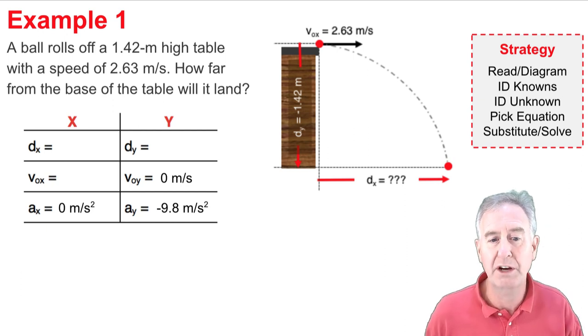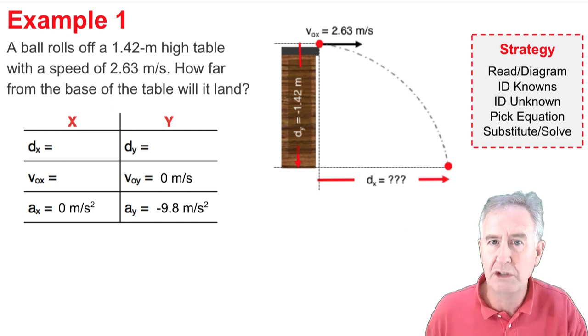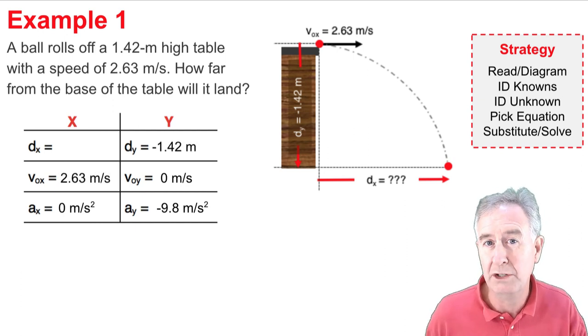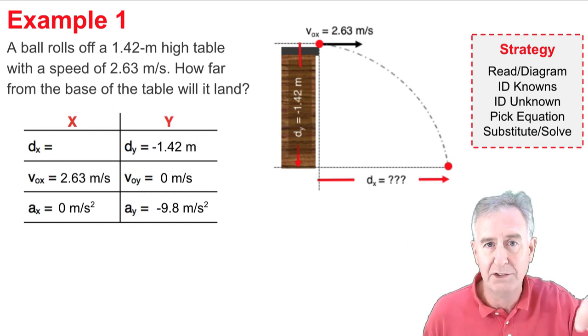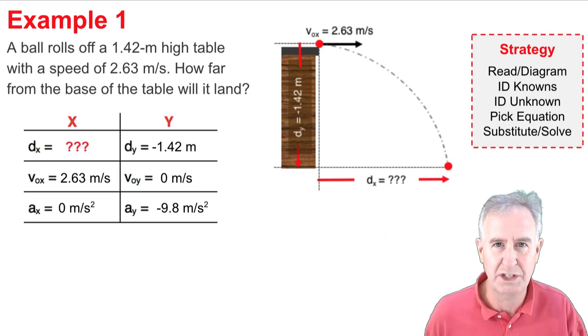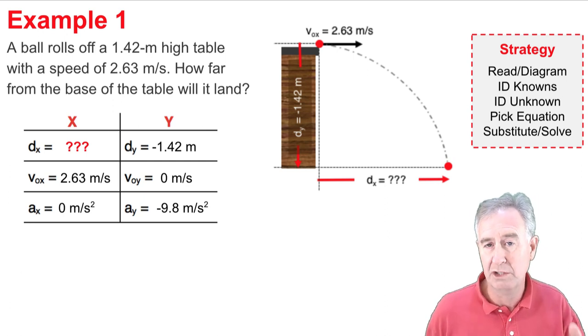Now, there's two numbers here. There's a velocity, 2.63, and that's an original velocity x-ward, so I put that in the table along with the 1.42 meters for the dy. It went down, so I put a negative 1.42 meters. And what I'm looking for is dx. Now, that takes care of my ID the knowns, ID the unknown.